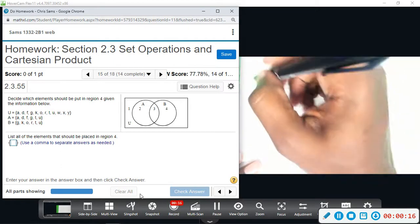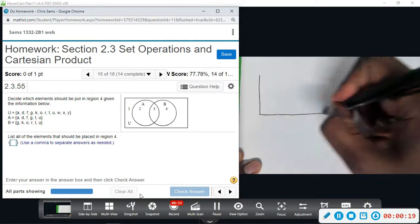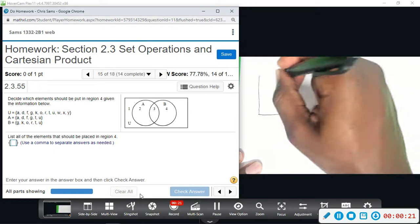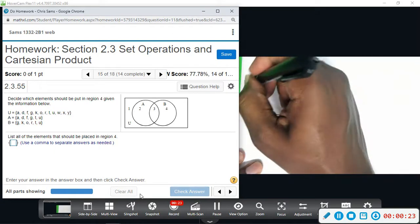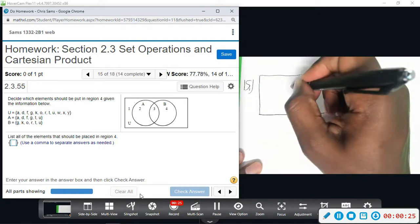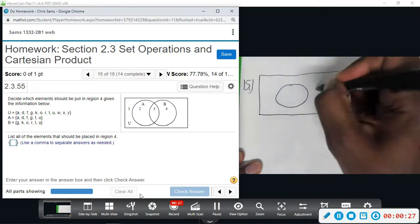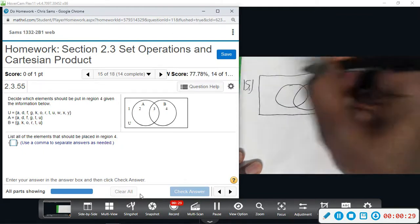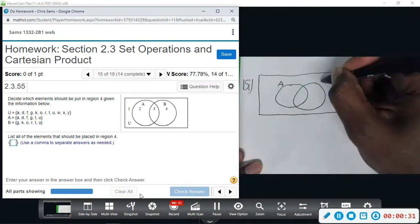I'm going to go ahead and draw the Venn diagram out to do it, helps to write it down. We have set A, set B, overlapping circles, so they have some things in common.